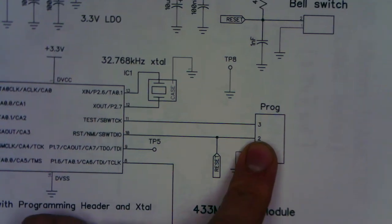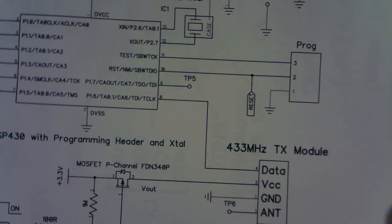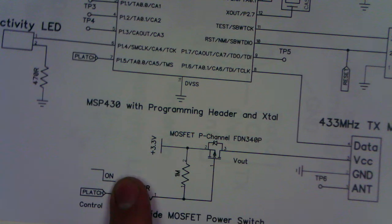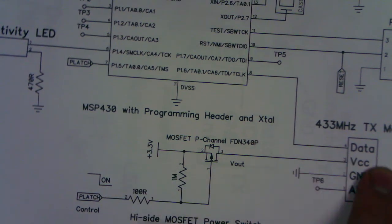programming header and space for the 433 MHz transmitter module, and the high side MOSFET switch to switch this transmitter module on and off to save power.